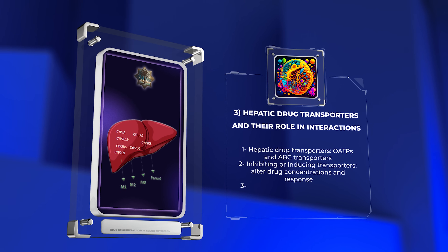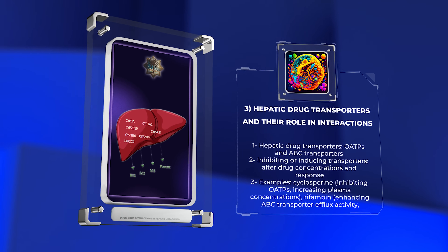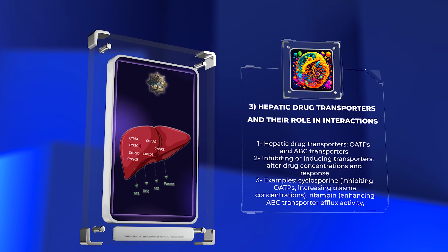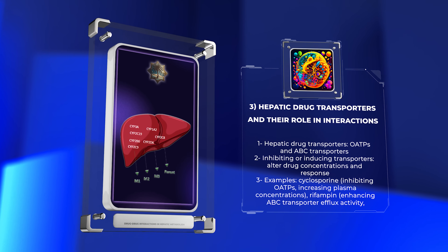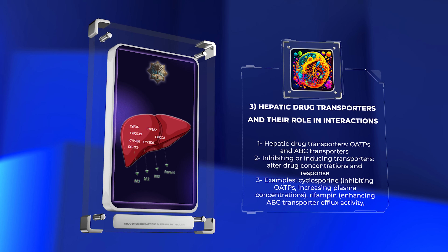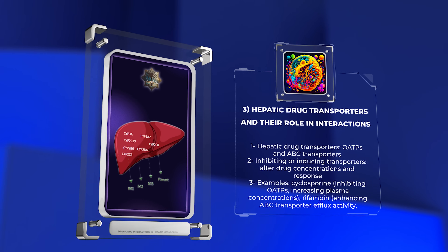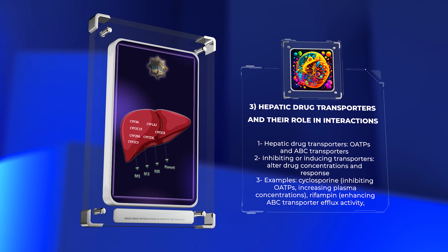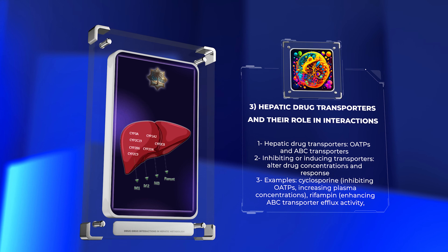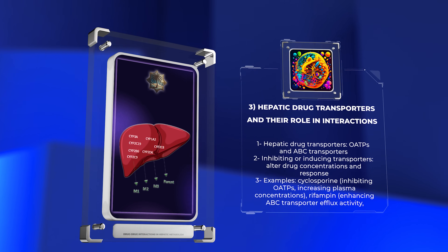Hepatic drug transporters such as OATPs and ABC transporters influence drug absorption, distribution, and elimination. Inhibiting or inducing these transporters can alter drug concentrations and response. For example, drugs like cyclosporine can inhibit OATPs, increasing plasma concentrations of co-administered drugs. On the other hand, inducers like rifampin can enhance the efflux activity of ABC transporters, leading to decreased drug concentrations. Understanding these interactions is vital for optimal dosing and preventing toxicity.